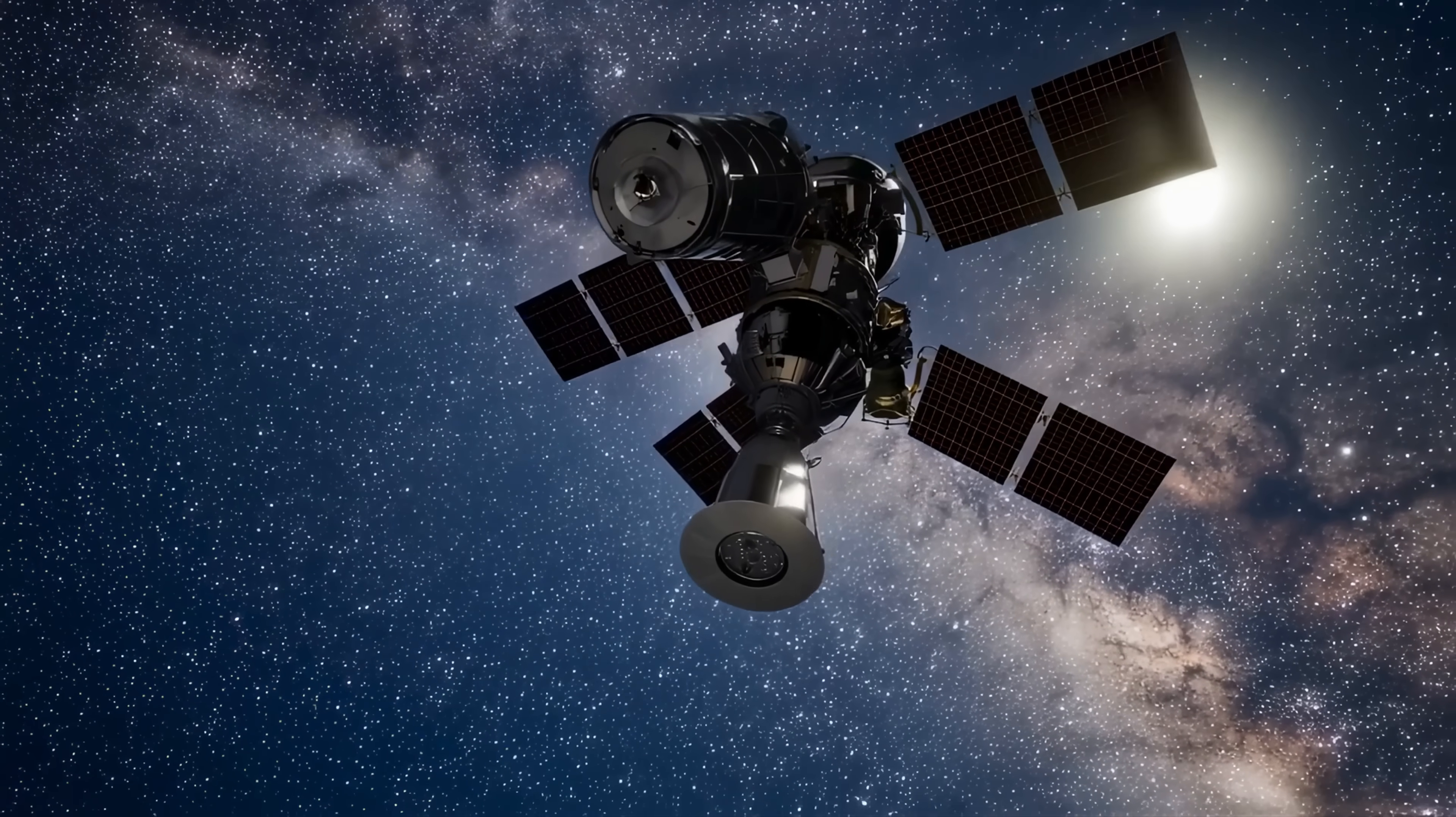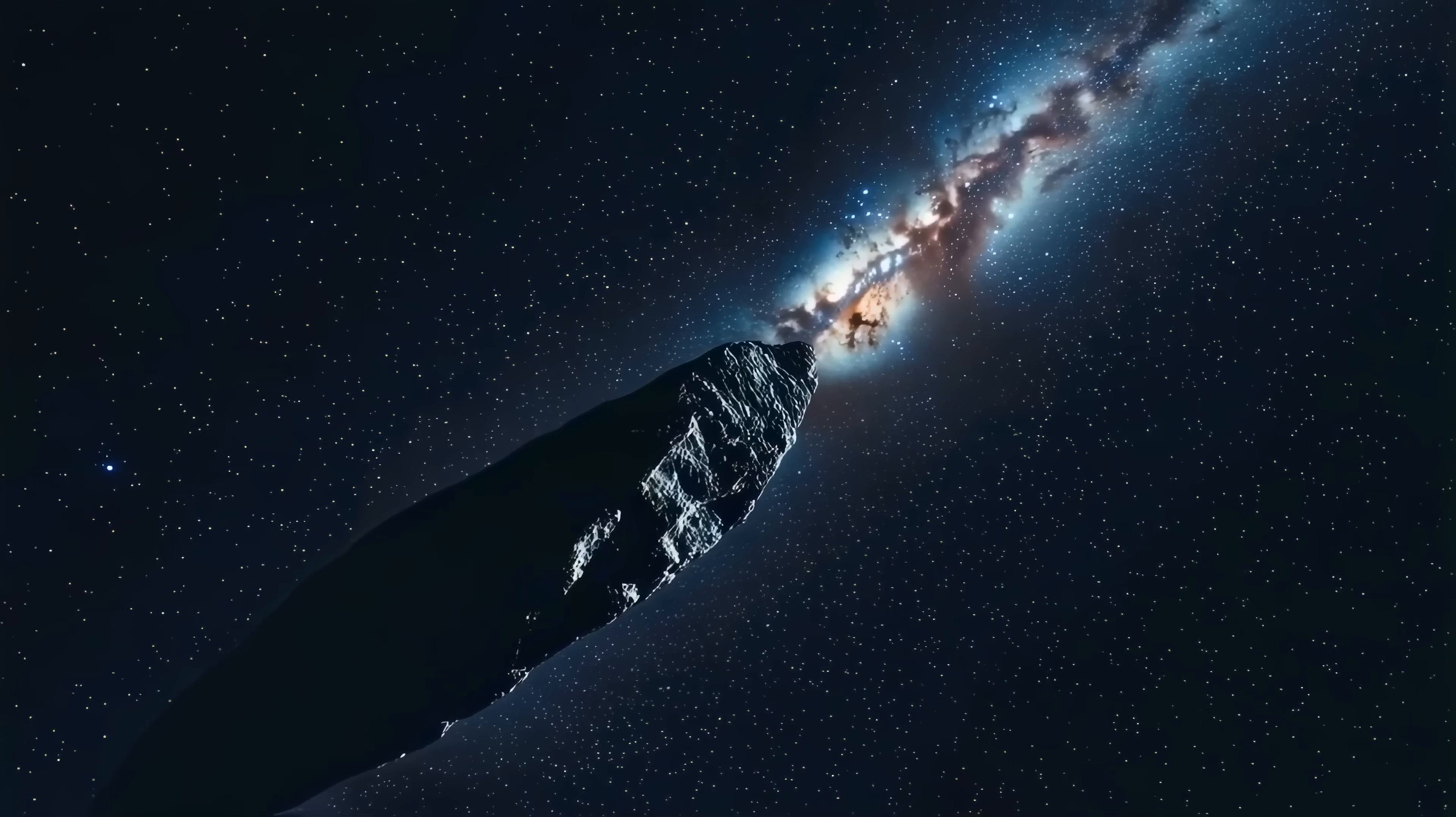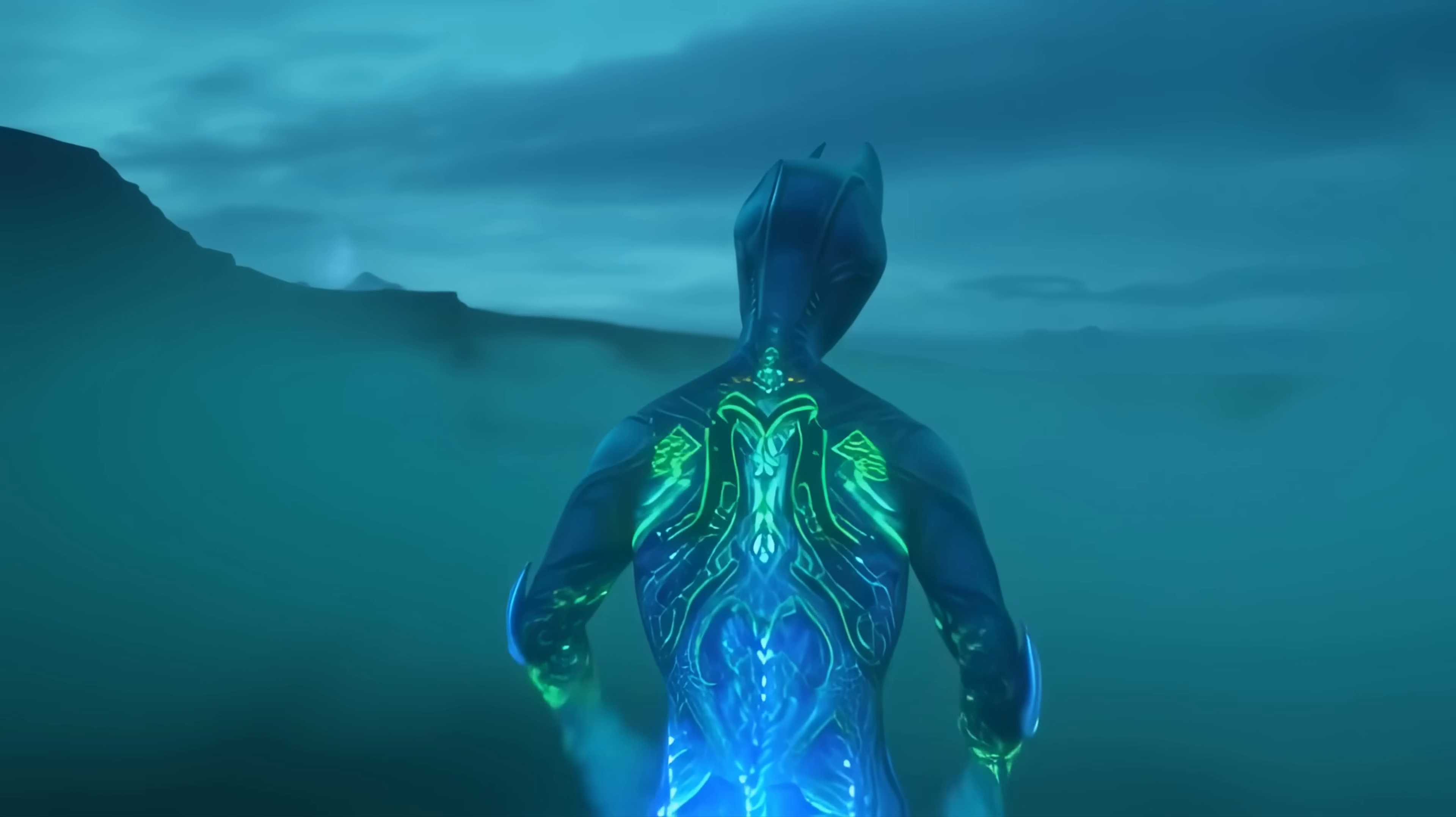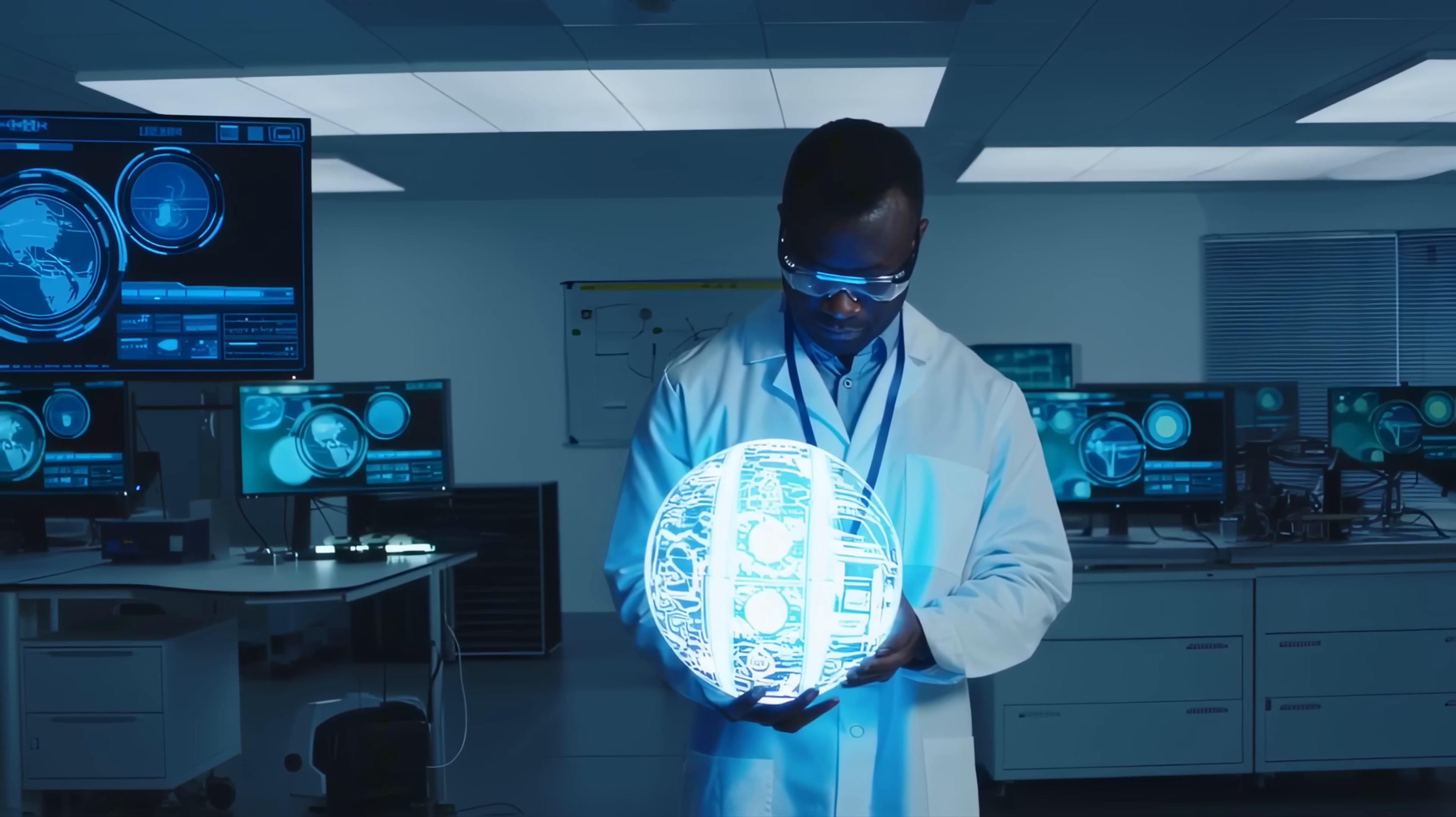Hubble gave us the first clues, but they raised more questions than answers. JWST then stepped in to measure details that even Hubble couldn't resolve. The result is a clearer but also more puzzling picture of this strange visitor from beyond our solar system. By the end of this video, you'll see why researchers say this one object could reshape how we prepare for the next interstellar arrival.